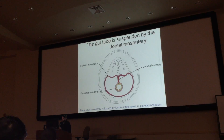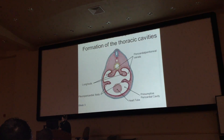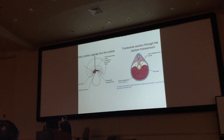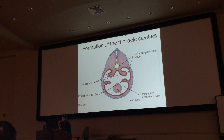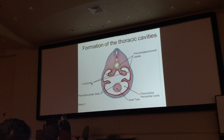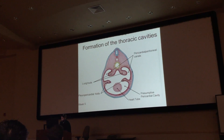Starting around the end of week four, he explains how you get your thorax and abdomen. This picture is a transverse section more anterior — closer to your head than the previous picture. He shows how it's working, then talks about lung buds and how they start developing and push outward. That's basically all you need to know about lungs at this stage.